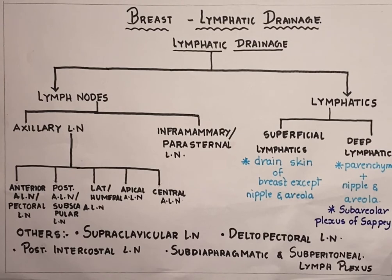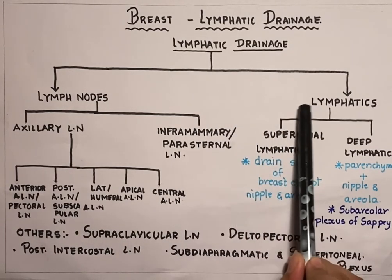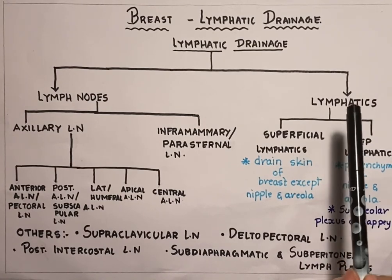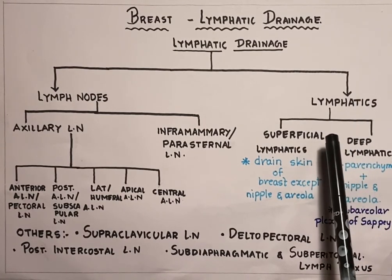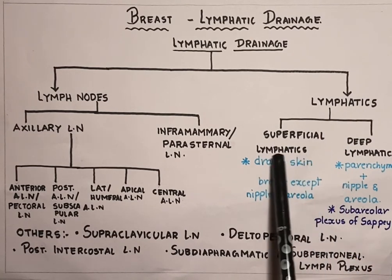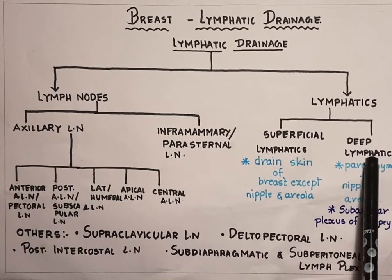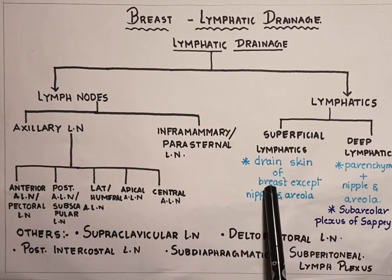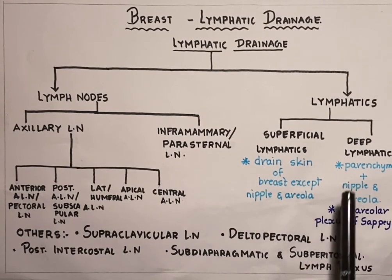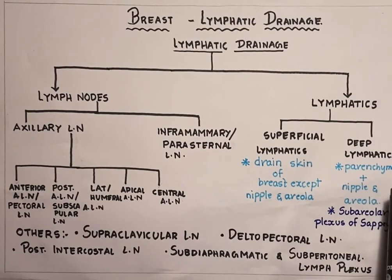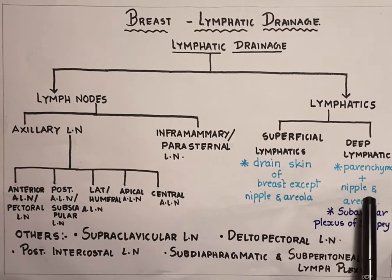Now coming to the lymphatics of the mammary gland or breast region — these are the vessels which carry lymph from the breast. They are divided into two groups: the superficial lymphatics, which drain the skin of the breast except the nipple and areola, and the deep lymphatics, which drain the parenchyma of the breast as well as the nipple and areola.